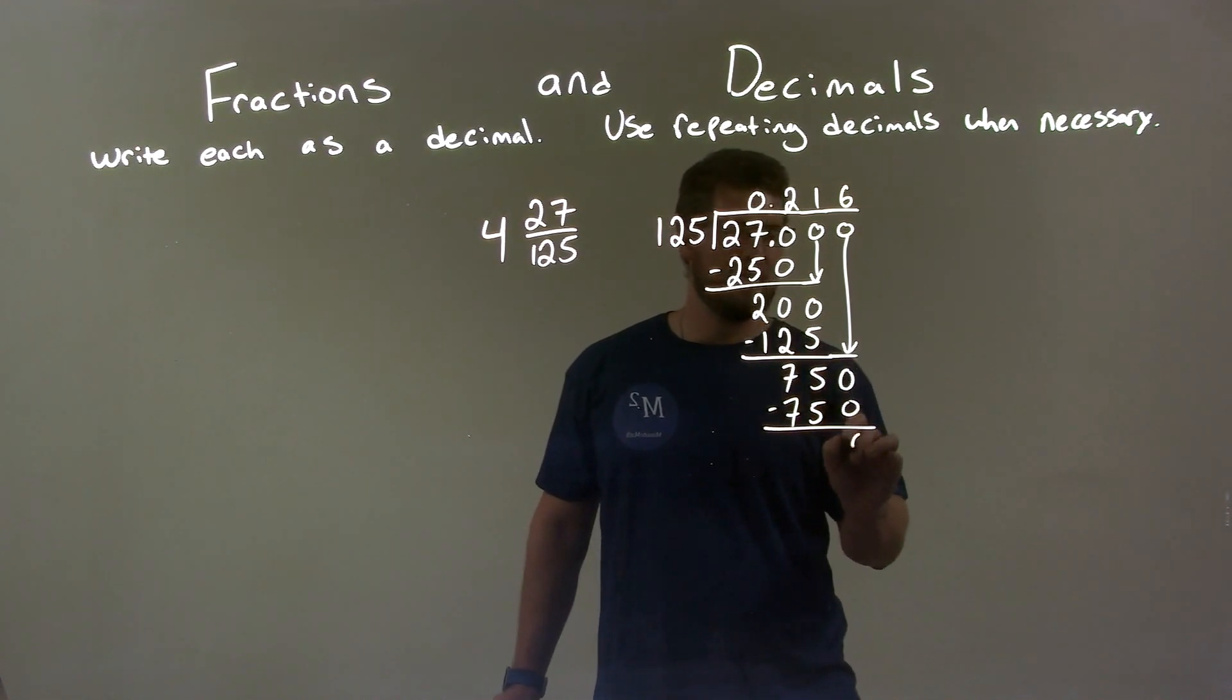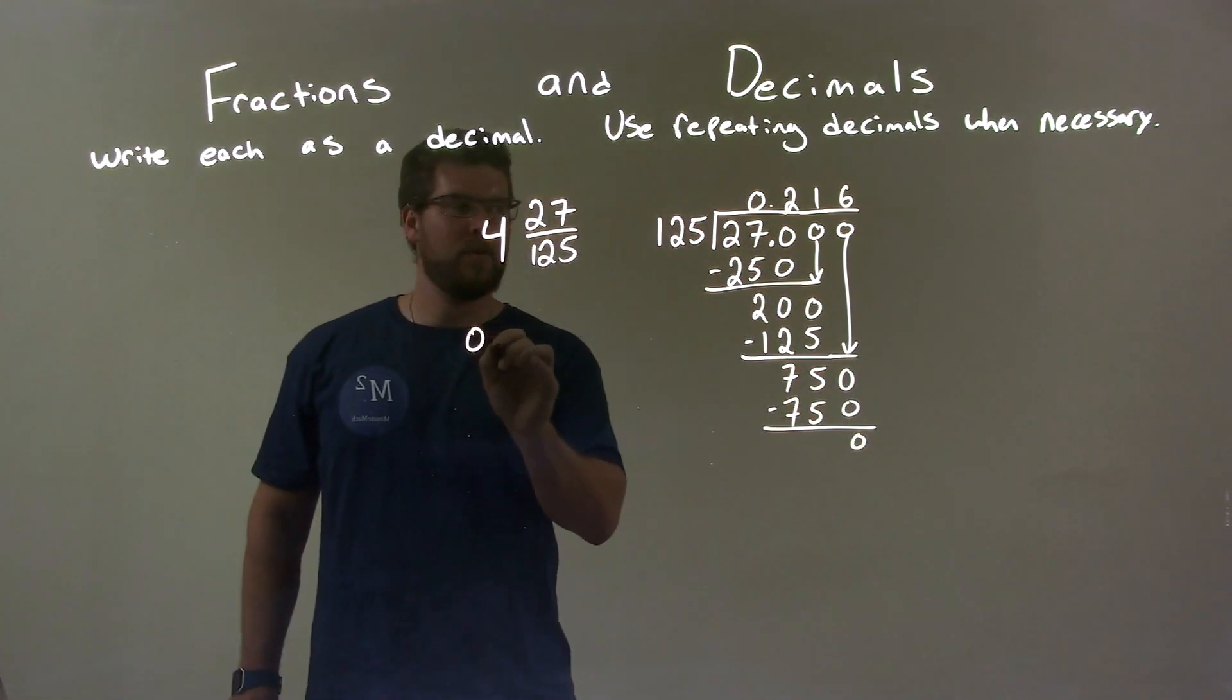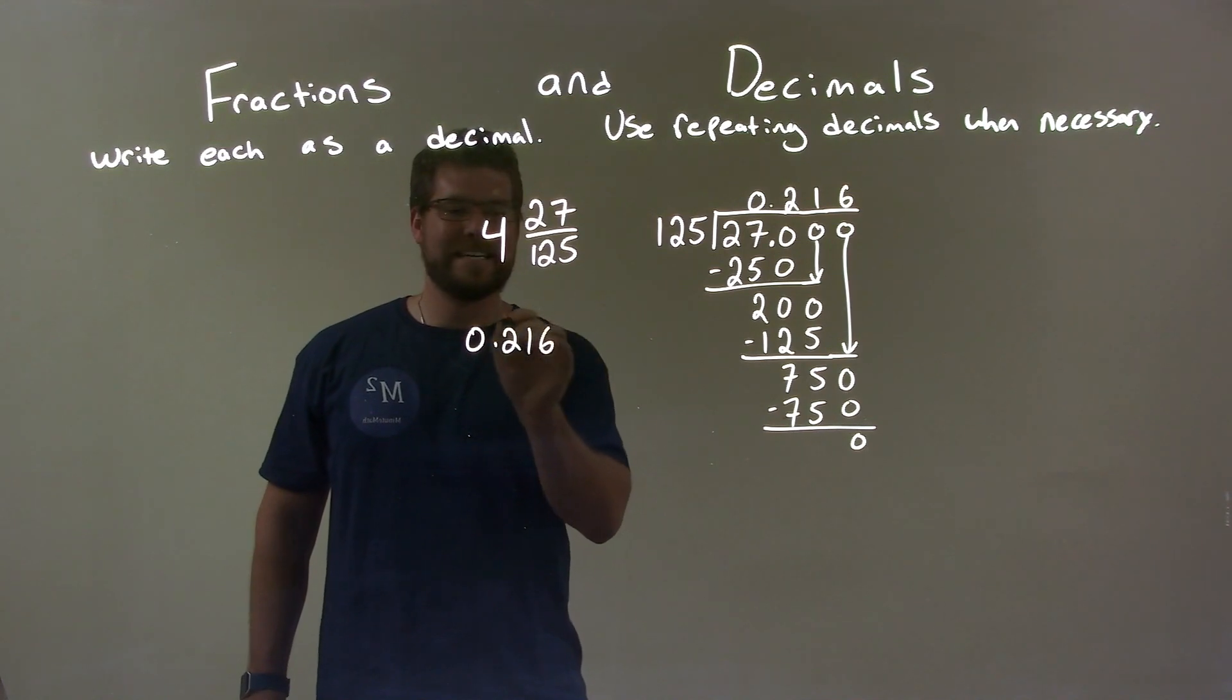750 minus 750 is zero, and so here we have our answer, 0.216.